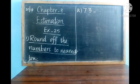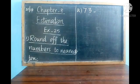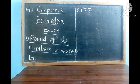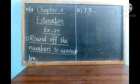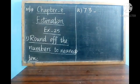Now we can start to write in our fair note. Write today's date: 20-10-20. Chapter 8. Leave one line, write the heading 'Estimation'. Leave one line, Exercise 25. Leave one line and write Number 1: 'Round off the numbers to nearest 10.' After that, underline all the headings.